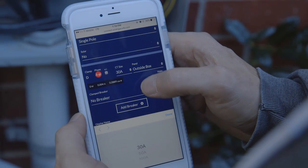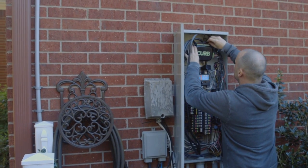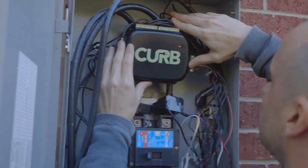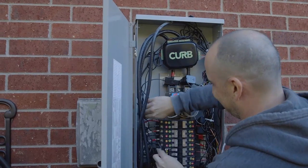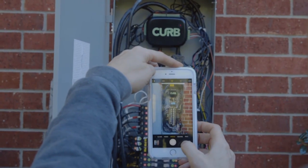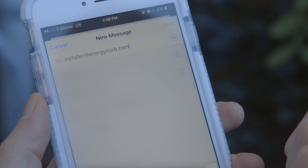Now let's mount the unit. Secure Curb into the panel by mounting it to the back or inside wall of the panel with tape, velcro, or any other fastener that meets code for the region where Curb is being installed. Make sure to take a well-lit high resolution photo of the open panel and email it to installer@energycurb.com with the serial number and customer name as the subject line.